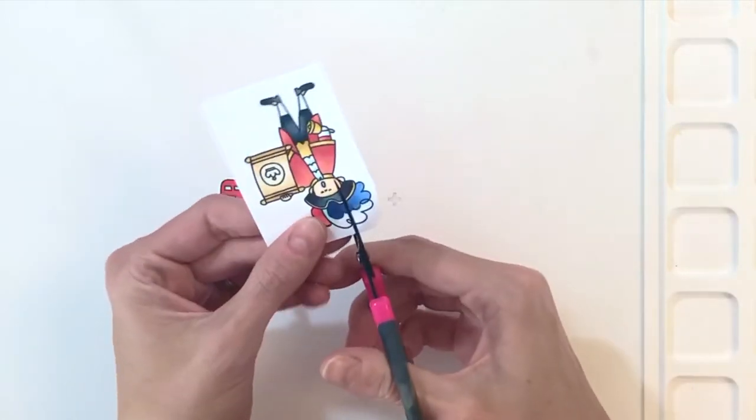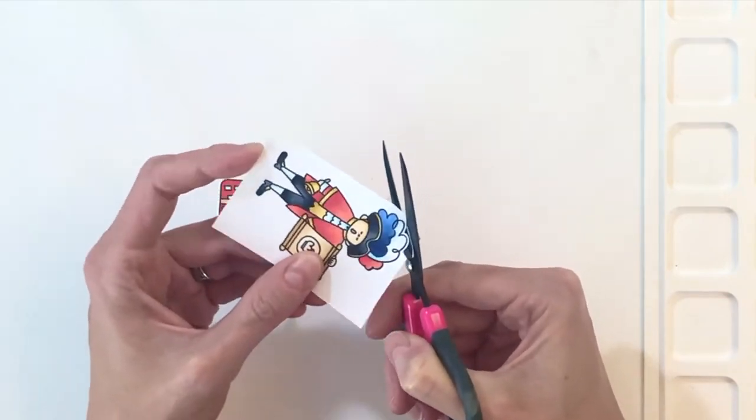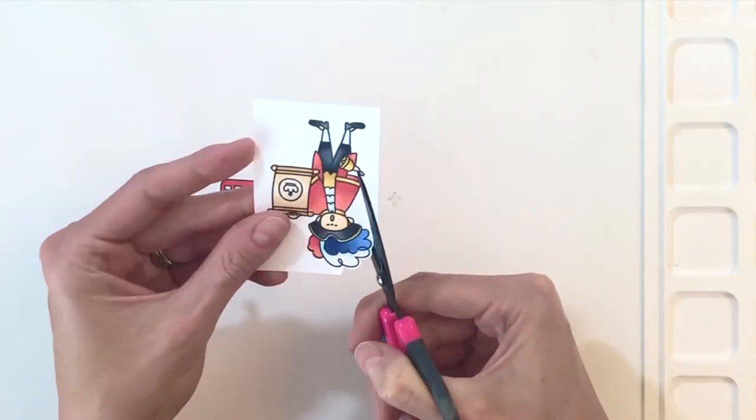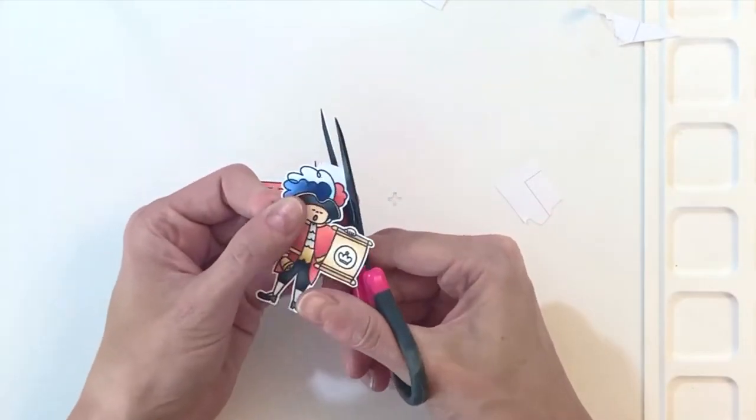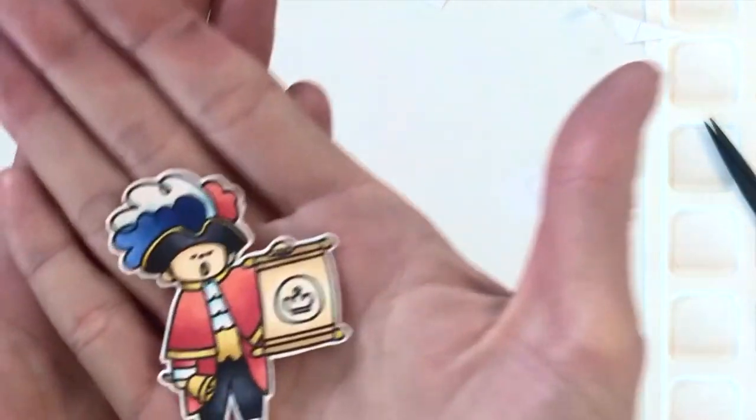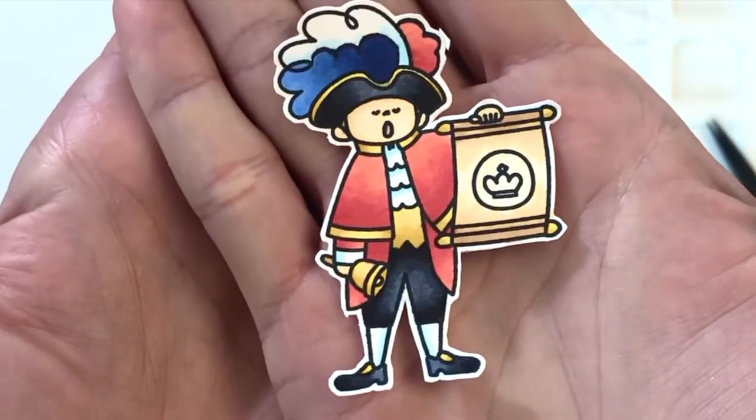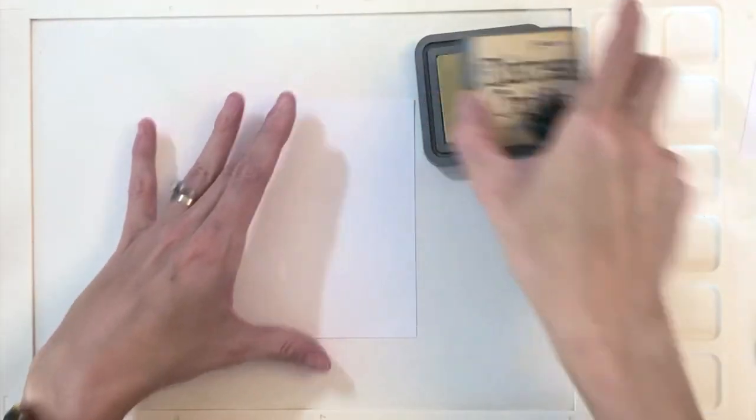So I went ahead and die cut the images out with the matching die. Remember I couldn't use the matching die with this guy because I added that little red feather, so I am fussy cutting this out by hand. I am making sure to leave that white border so it looks just like the die cut images.